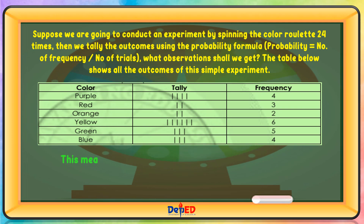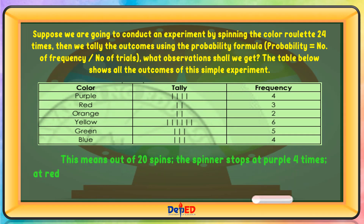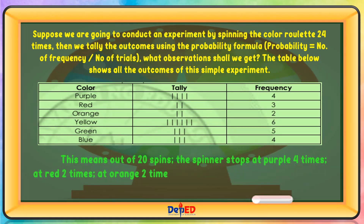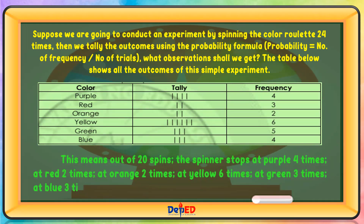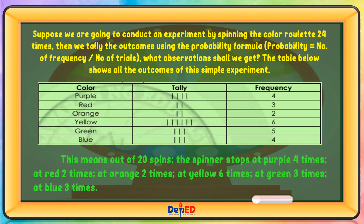This means, out of 20 spins, the spinner stops at purple 4 times, at red 2 times, at orange 2 times, at yellow 6 times, at green 3 times, and at blue 3 times.